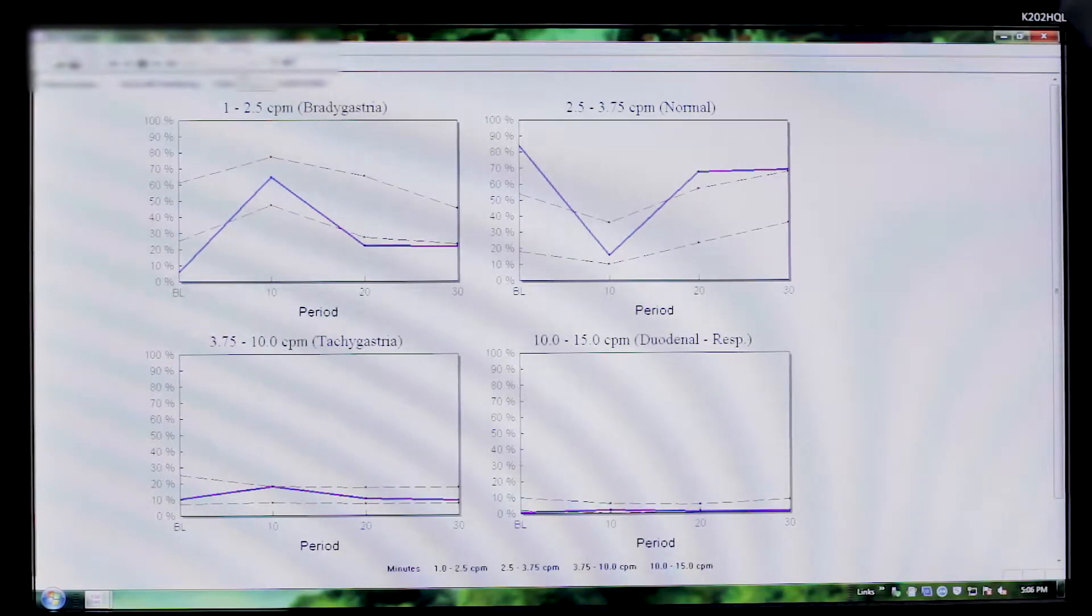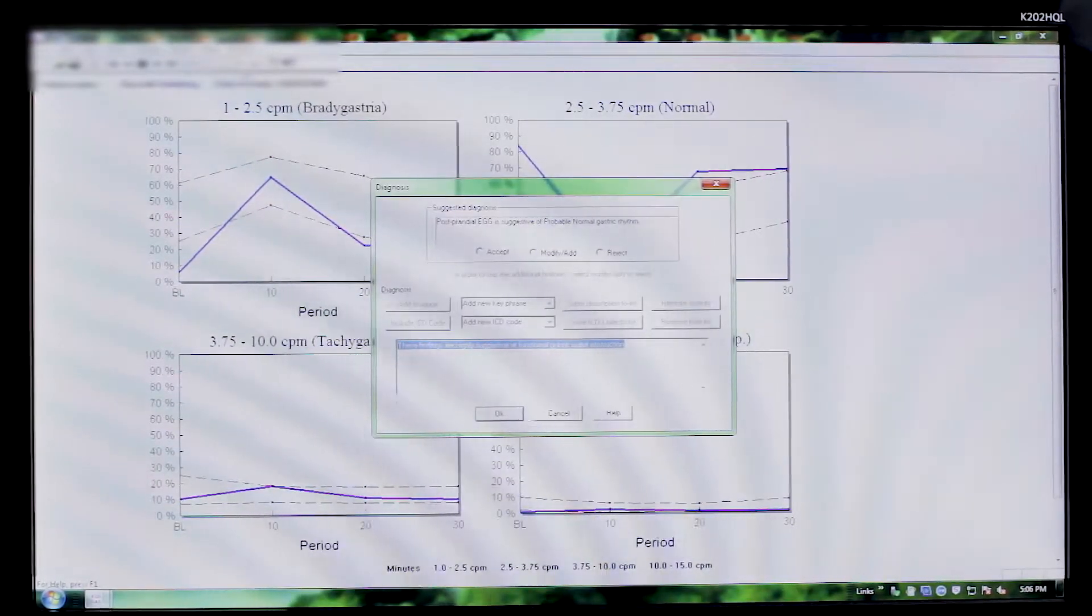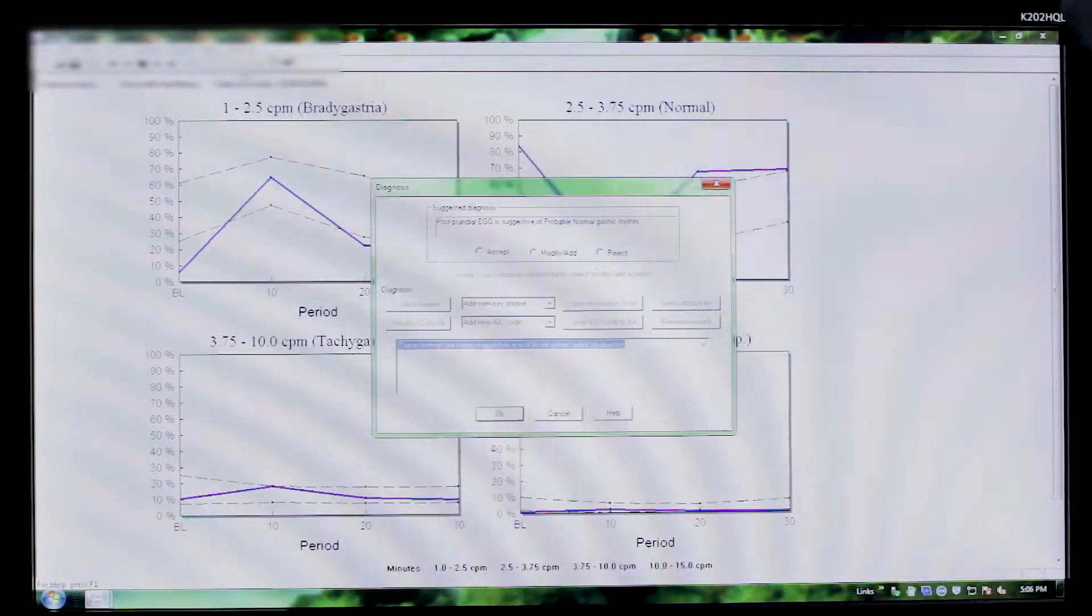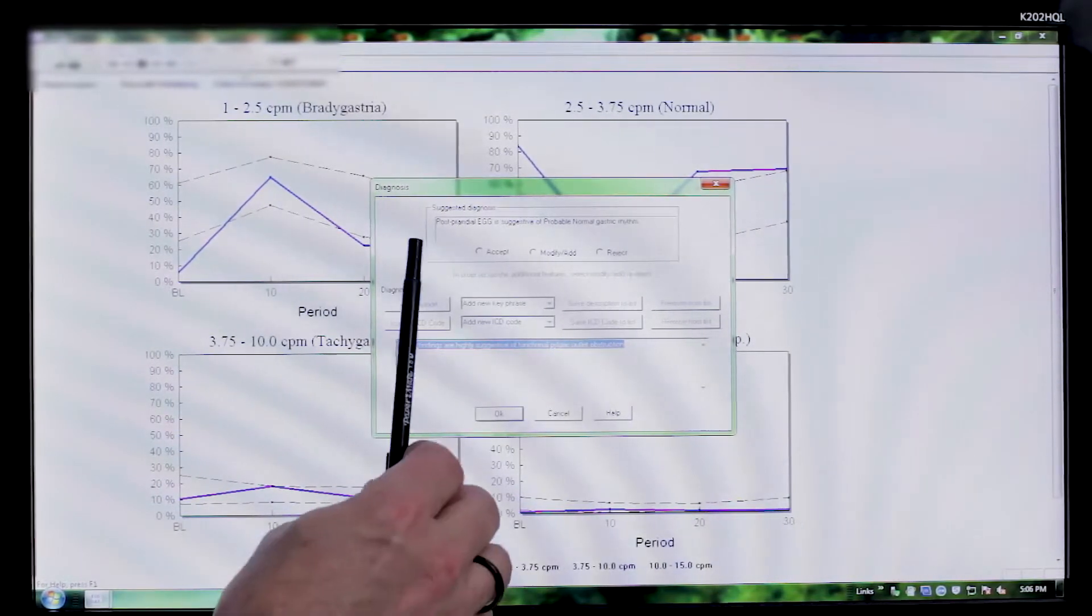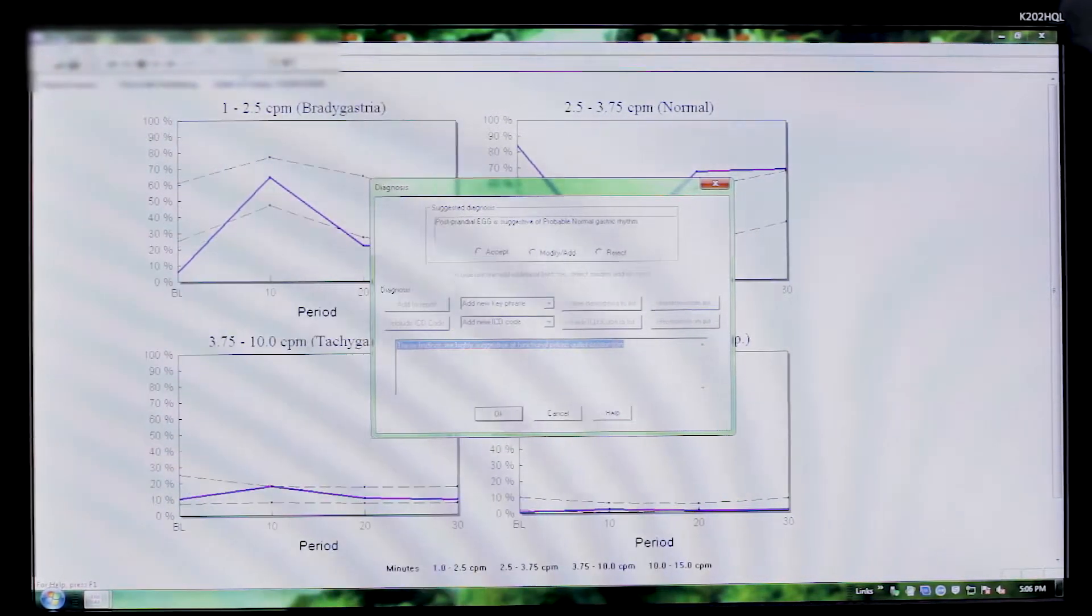The next step after you've analyzed the study is we're going to go over here to the DX button, which is the suggested diagnosis based upon algorithms. When you click on that, you're going to see the suggested diagnosis of probable normal gastric rhythm. And that's because the dominant frequency is all within the three-cycle-per-minute box.